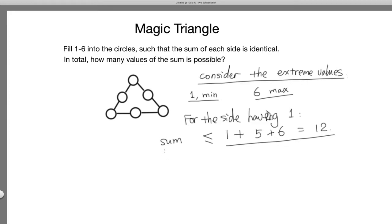How about the minimum value of the sum? For the side having 6, for that side the sum is going to be at least 6 plus the other two values, which are at least 1 and 2. So 6 plus 1 plus 2 is at least 9.